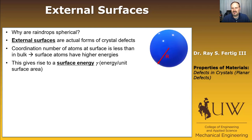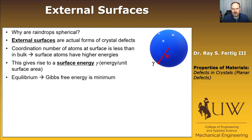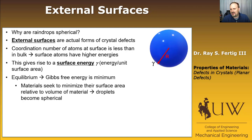We usually denote the surface energy as gamma, and it's an energy per unit surface area. So we have a sphere with some radius R and some interface energy gamma. Equilibrium is where the Gibbs free energy is a minimum, and materials are going to seek to minimize their surface area relative to their volume, because the surface itself has additional energy beyond the bulk.